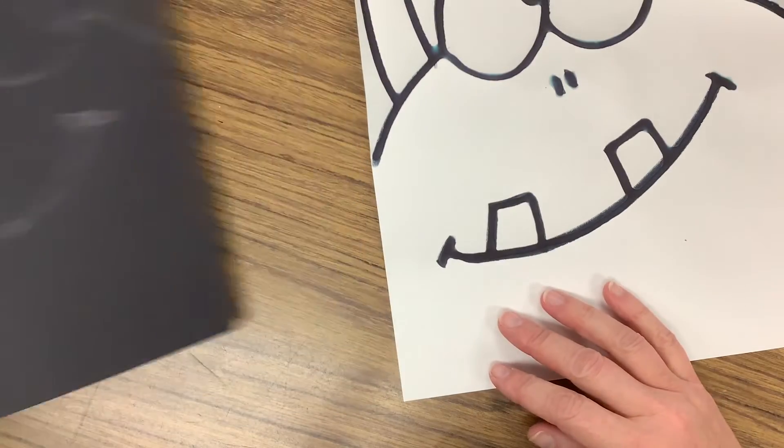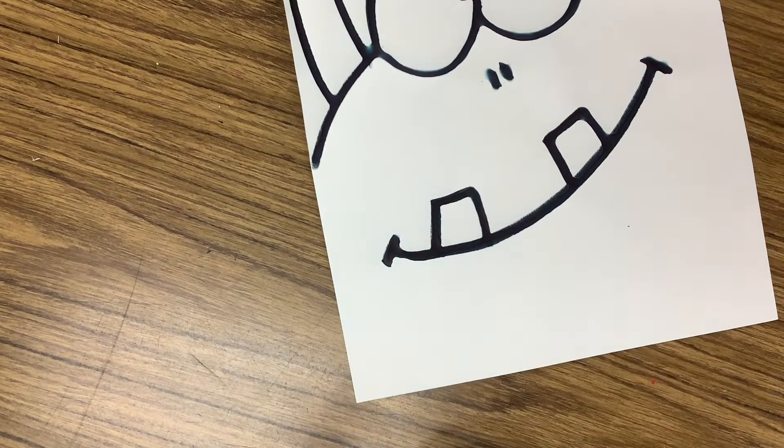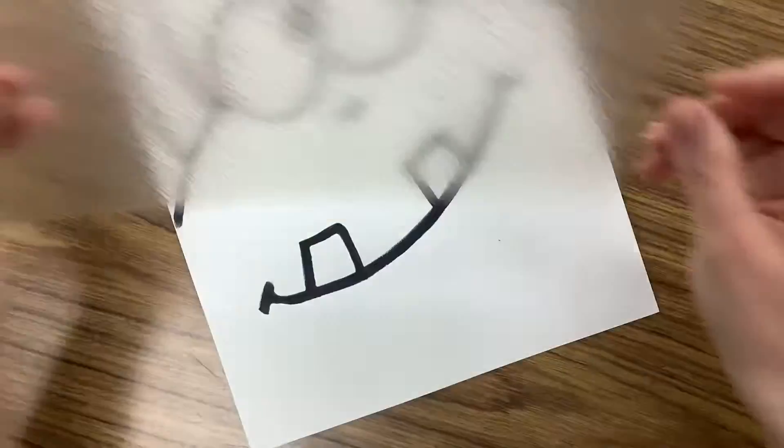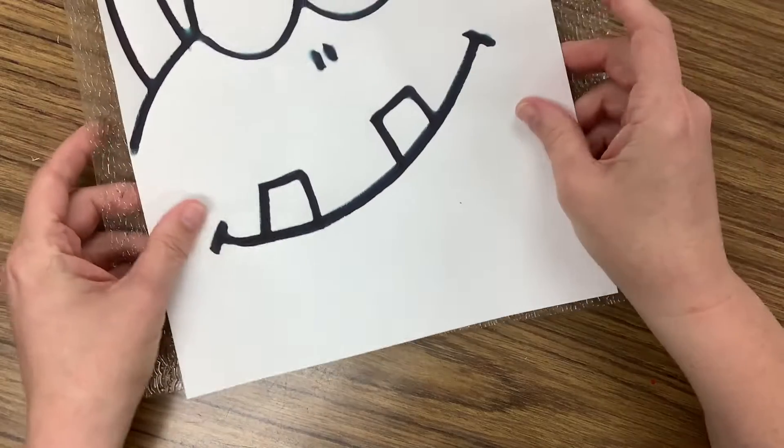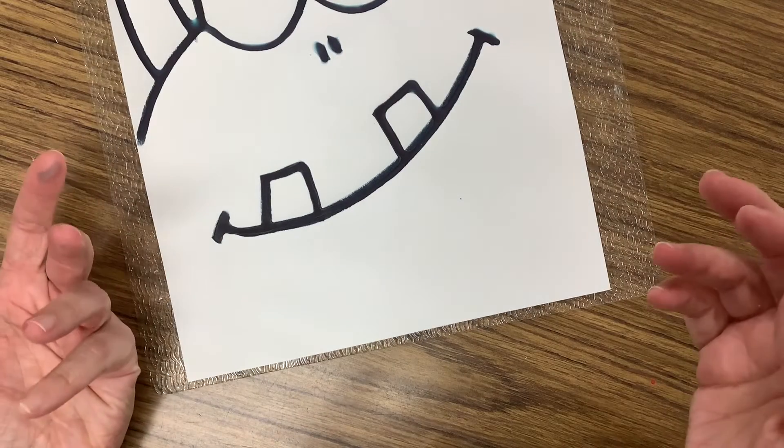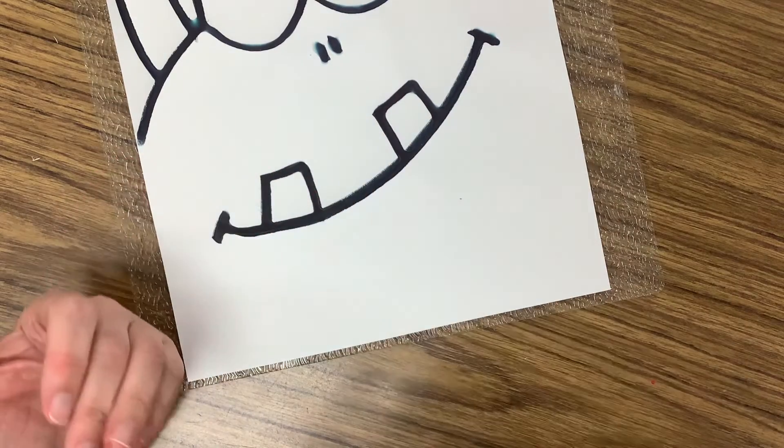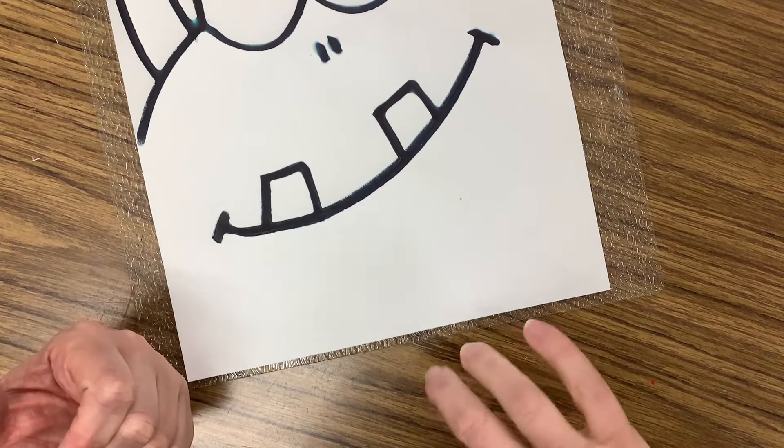Now, if you're coloring on the white paper, what you want to do is find some textures. Now, I have texture rubbing plates that I can slip easily under my paper. If you're doing this at home, you might have to go on a texture hunt and find some places where you can put your paper on top of bumpy things to get some texture.